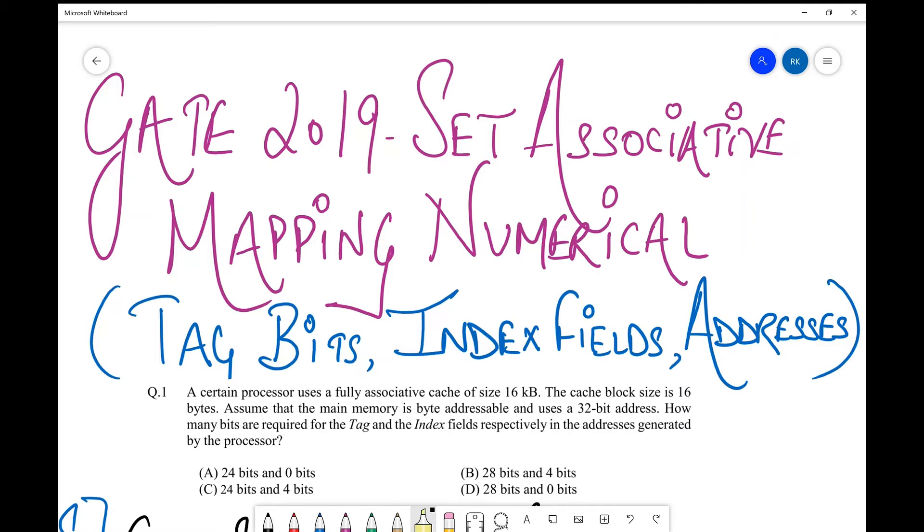So let's see what the question is. Here it says: a certain processor uses a fully associative cache of size 16 kilobytes. The cache block size is 16 bytes. Assume that the main memory is byte addressable and uses a 32-bit address. Then how many bits are required for the tag and index fields respectively in the addresses generated by the processor? This is very much simpler when it has given you the necessary ingredients required to compute the tag bits, index bits, and word offset bits. That's all you have to do and finally you need to give the answer.